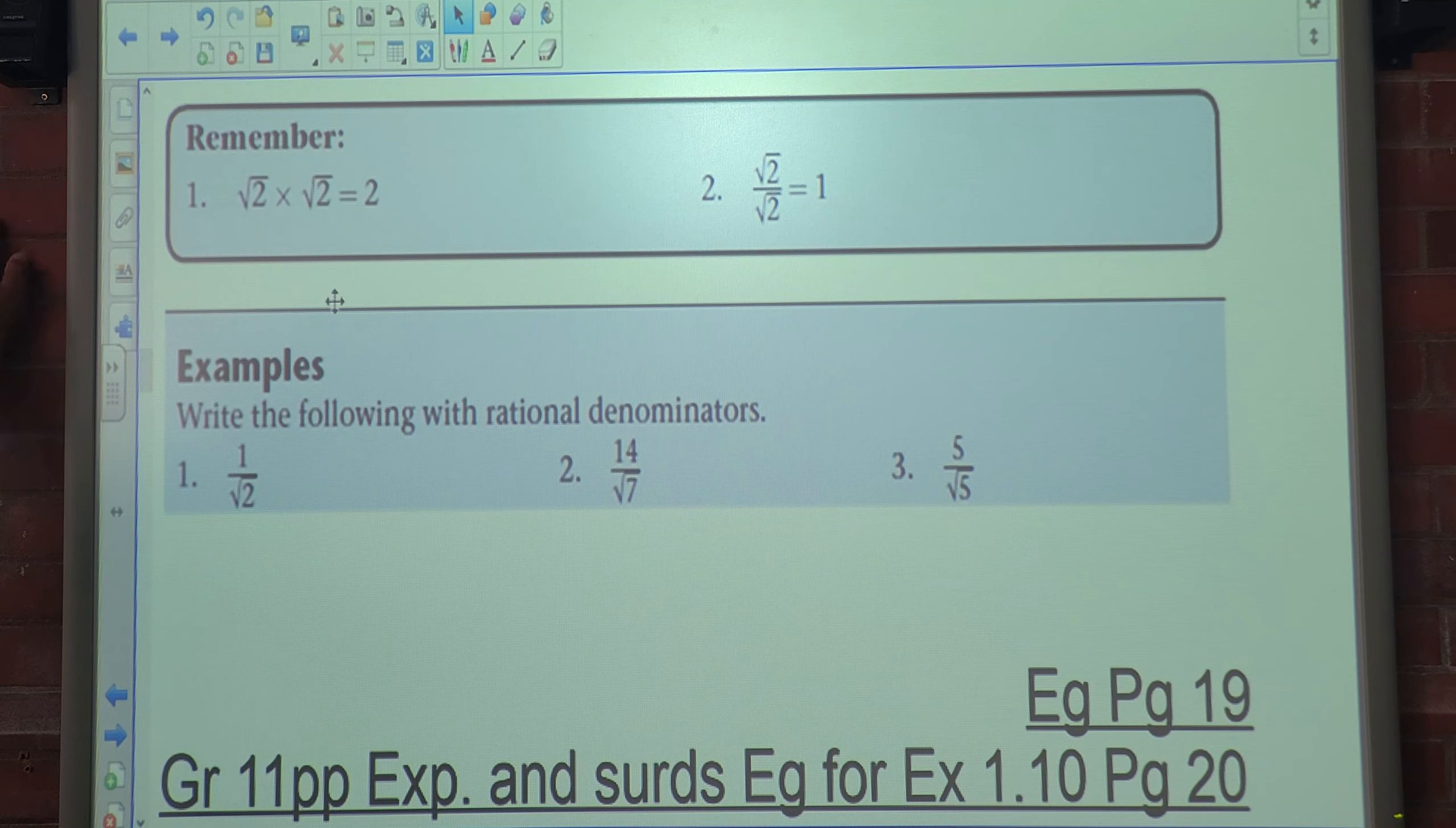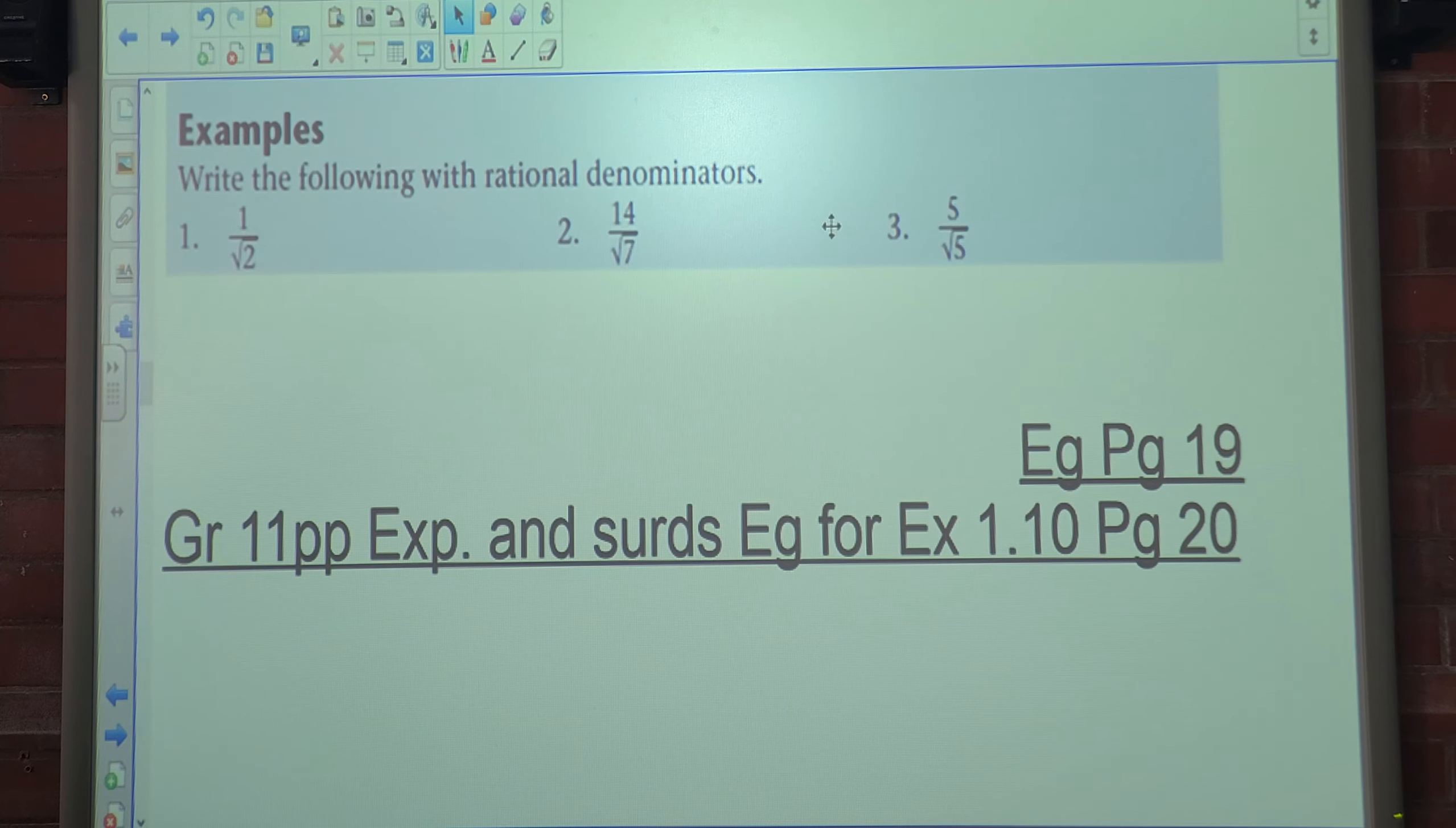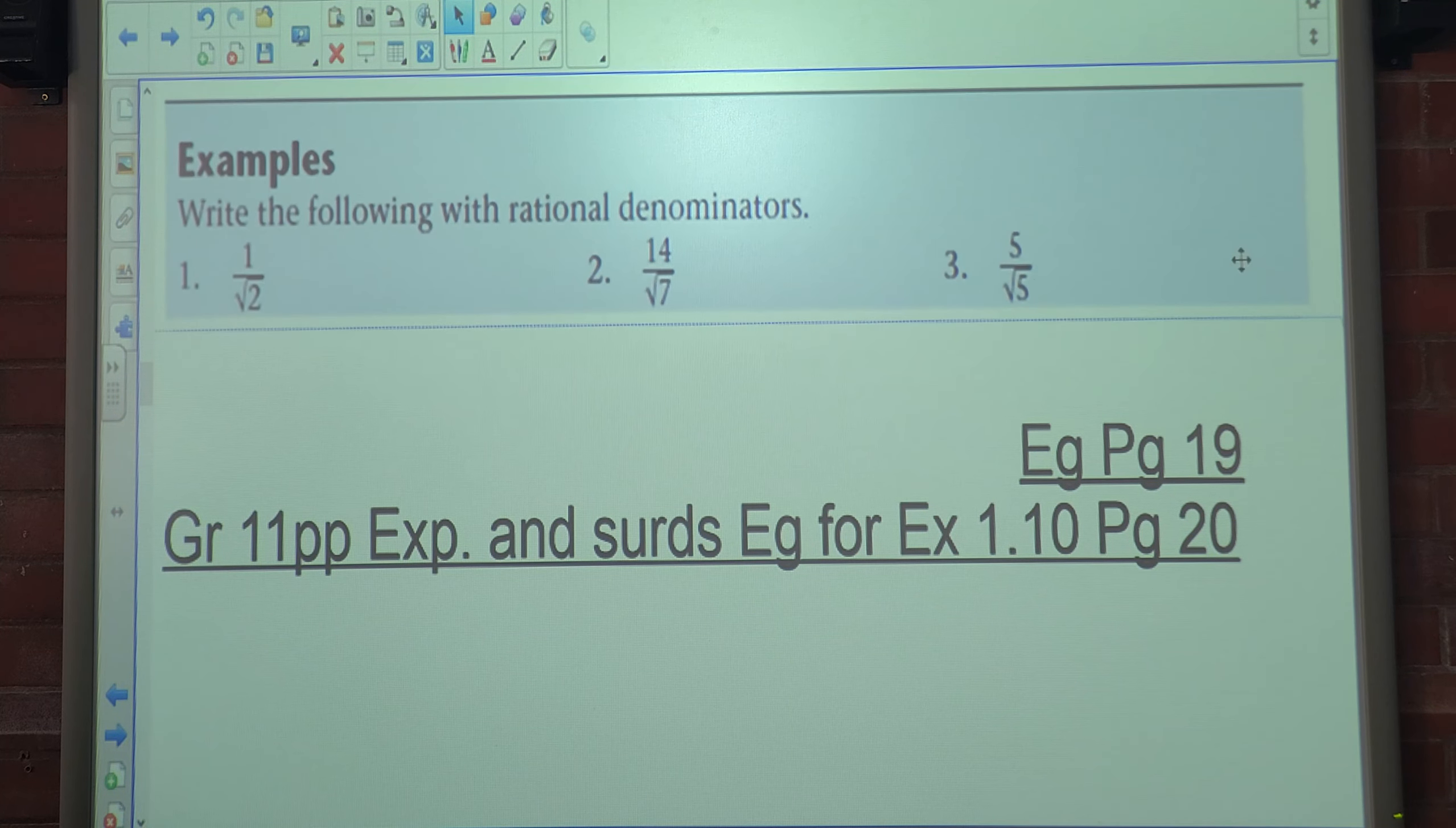Okay. So we know that the square root of 2 times the square root of 2 is 2. And we also know that the square root of 2 divided by the square root of 2 is 1. So write the following with rational denominators is our instruction.